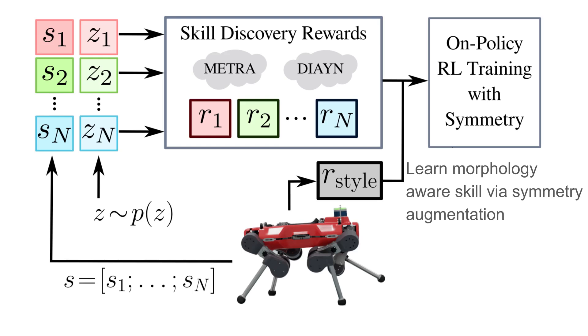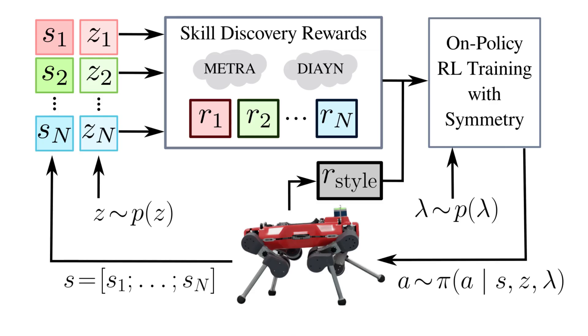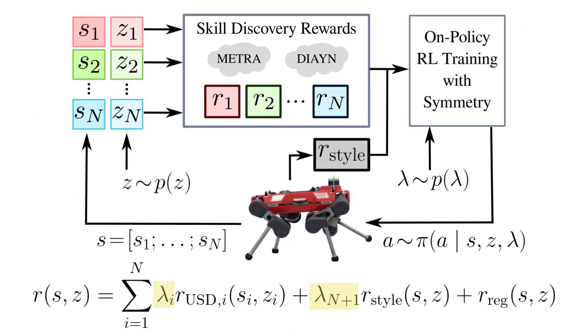Finally, some skills are naturally in conflict with one another. To manage these situations, we introduce factor weights lambda. The policy is conditioned on both the skill vector and these weights, allowing it to dynamically prioritize certain behaviors. Effectively, these weights directly scale the reward from each individual factor, telling the policy which skill is most important at any given moment.